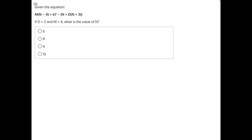Given the equation, if d is equal to 2 and m is equal to 4, what is the value of n? To solve this question, we need to substitute in our known variables d and m, and then use opposite operations to isolate and solve for the value of n.